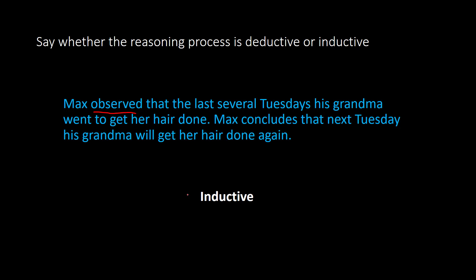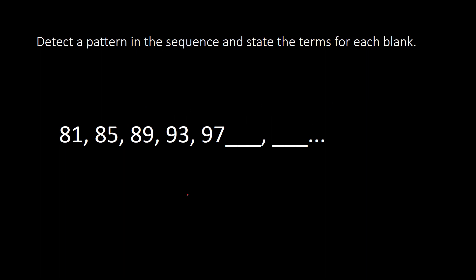Now using inductive reasoning, we are going to try to find patterns with a sequence of numbers. In this example, we have 81, 85, 89, 93, 97, etc., and we're trying to find the next two numbers. Notice each time we are adding four to get to the next number, so the pattern is adding four. You add four again to 97 to get 101, and then add four to 101 to get 105.